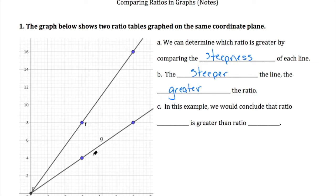So for this example, if we think about this line, we'll call it line F, and we'll call this line line G. Which line is steeper than the other? Well, we would conclude that F is greater than ratio G, because it's a steeper line.